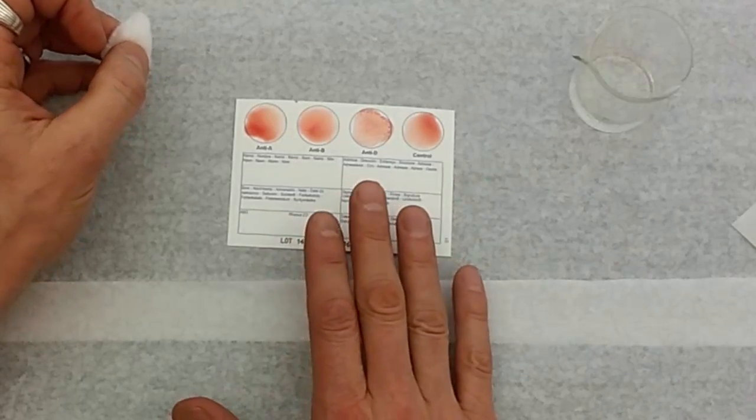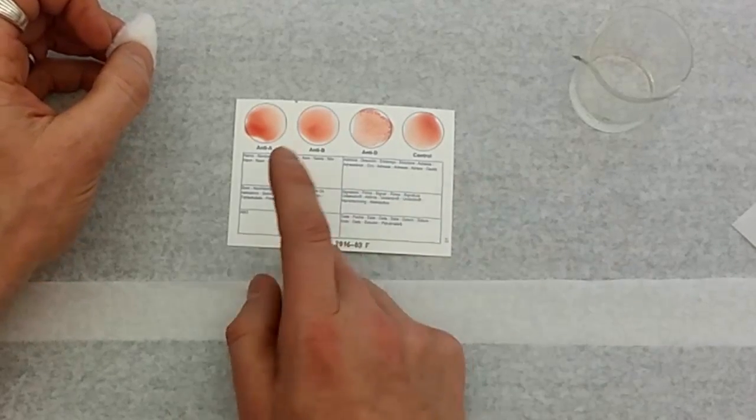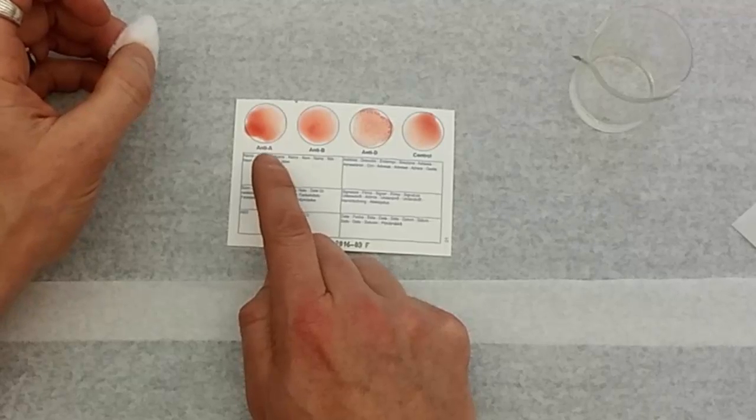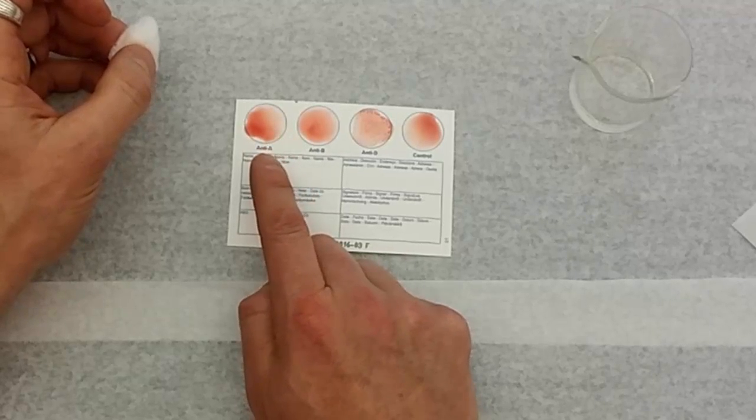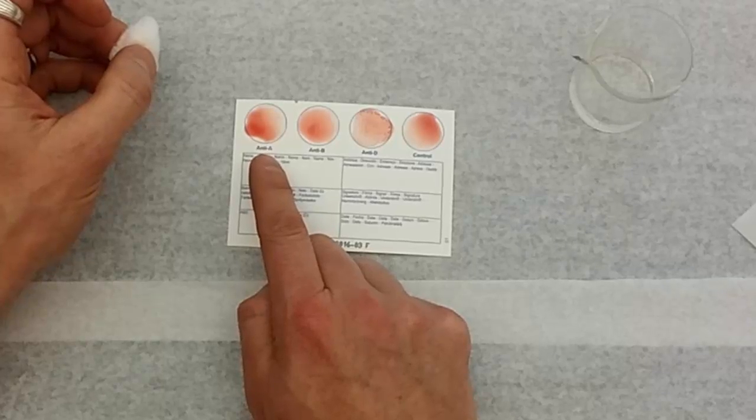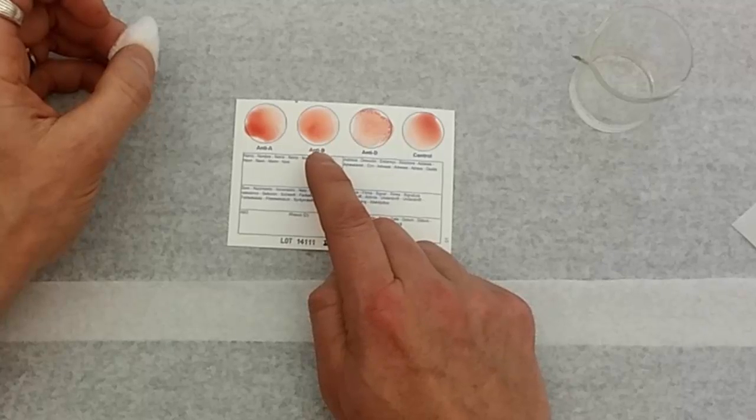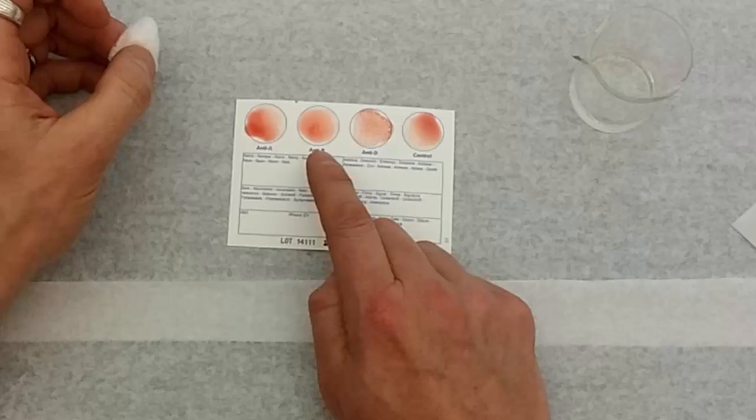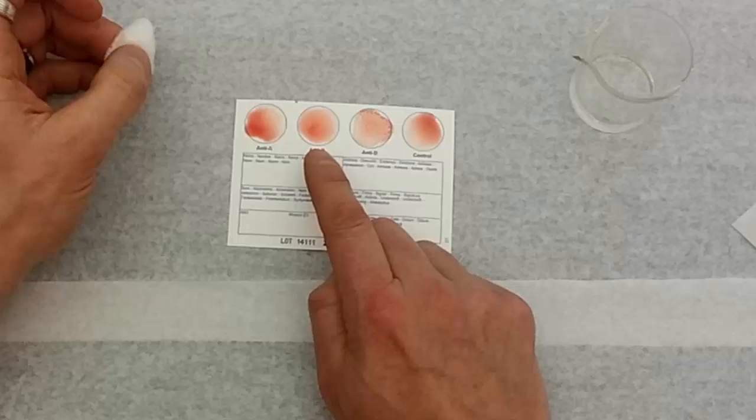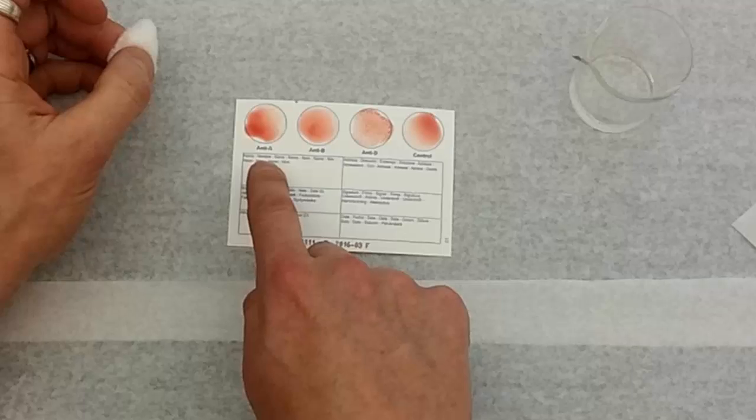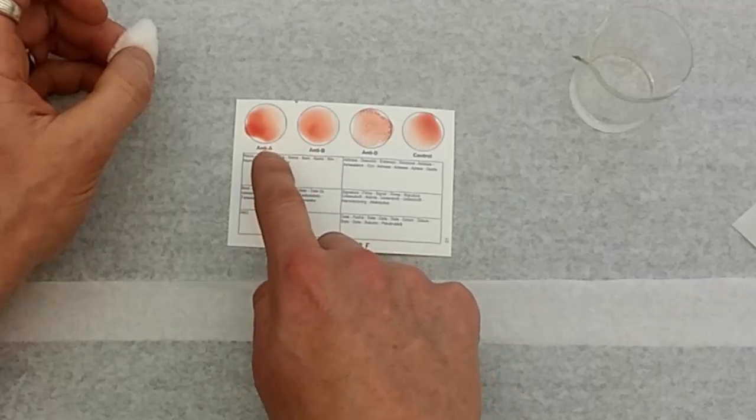Notice what's happening in the circles. I hope you can see it well. We don't see a reaction in circle A. And if you recall, circle A contained antibodies against A antigen. The lack of a reaction there tells us that on my red blood cells there are no A antigens. The next circle, circle anti-B, that had antibodies against B antigens. Since there's no reaction here, that means that there are no B antigens on my blood. At this point, just with these two circles, we can see that I don't have B antigens and I don't have A antigens. That makes my blood type O.